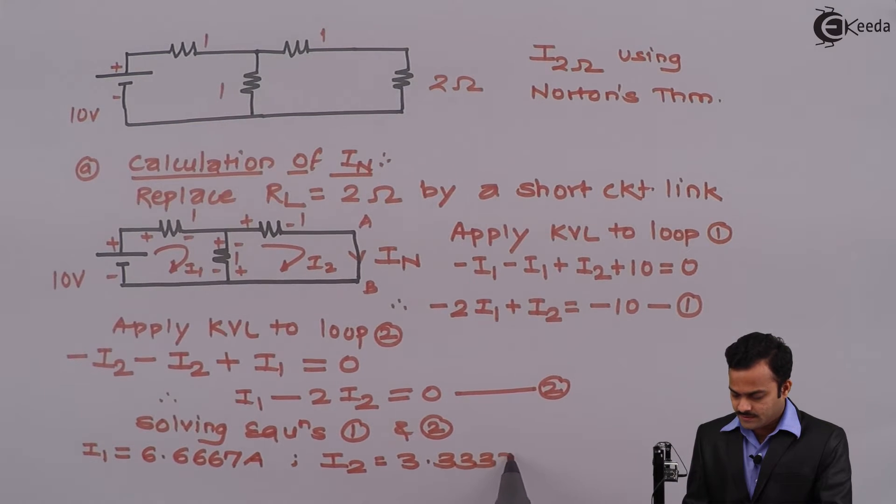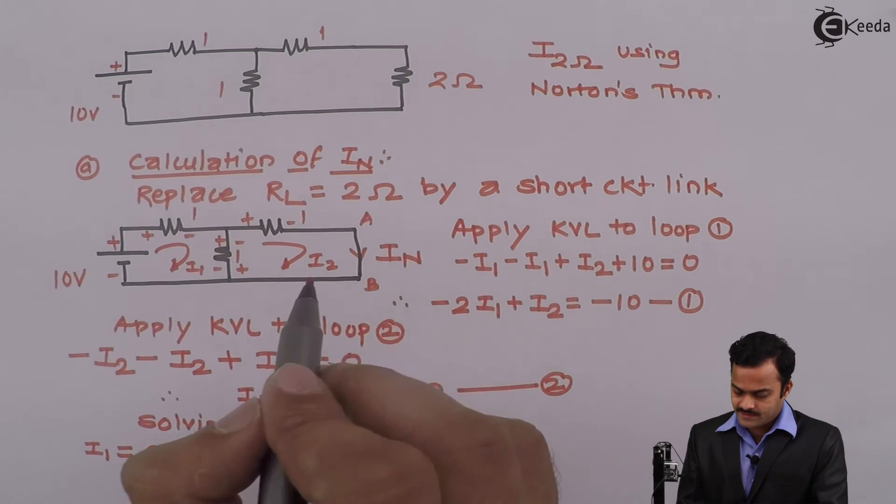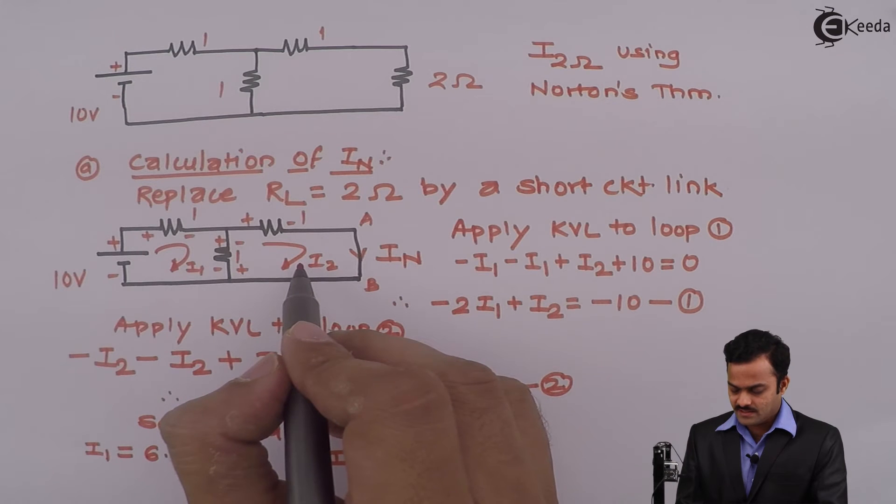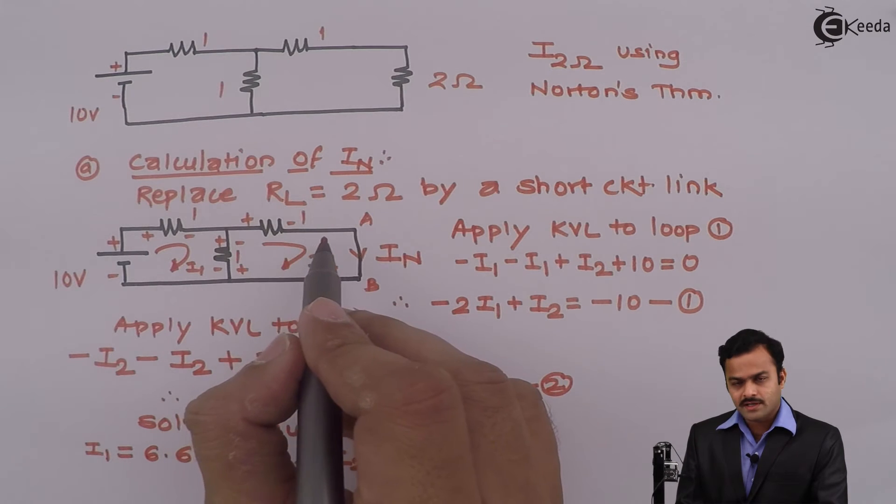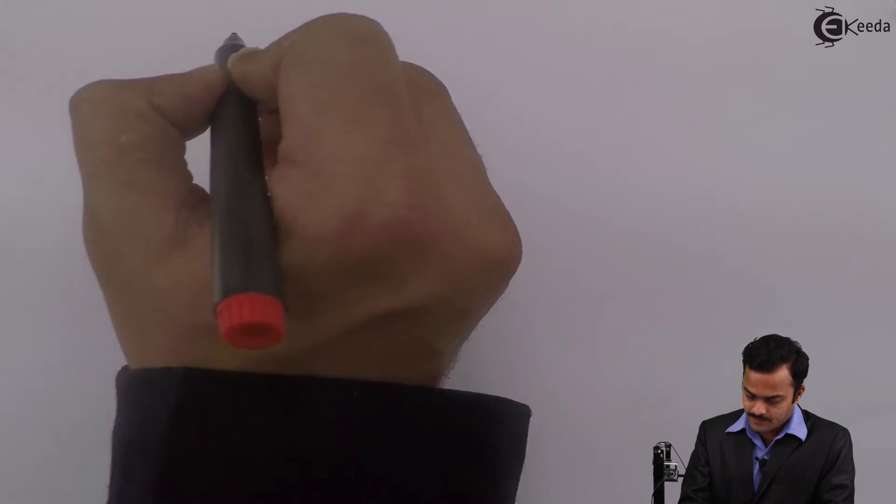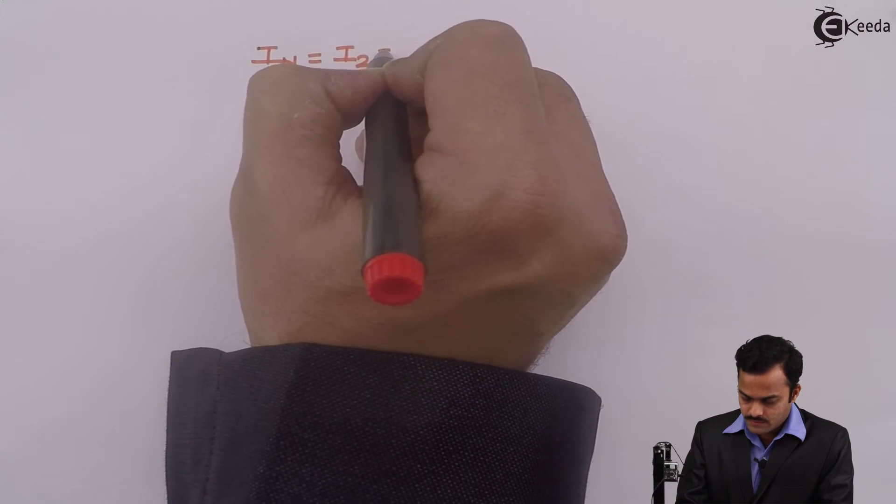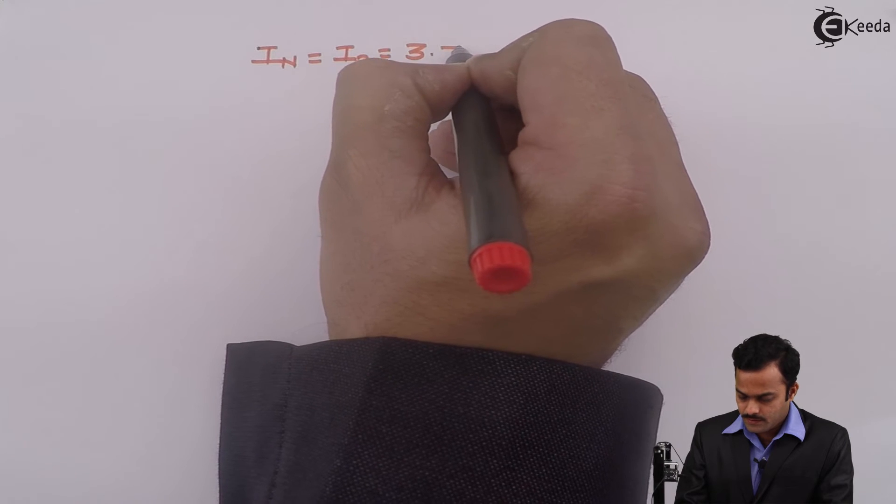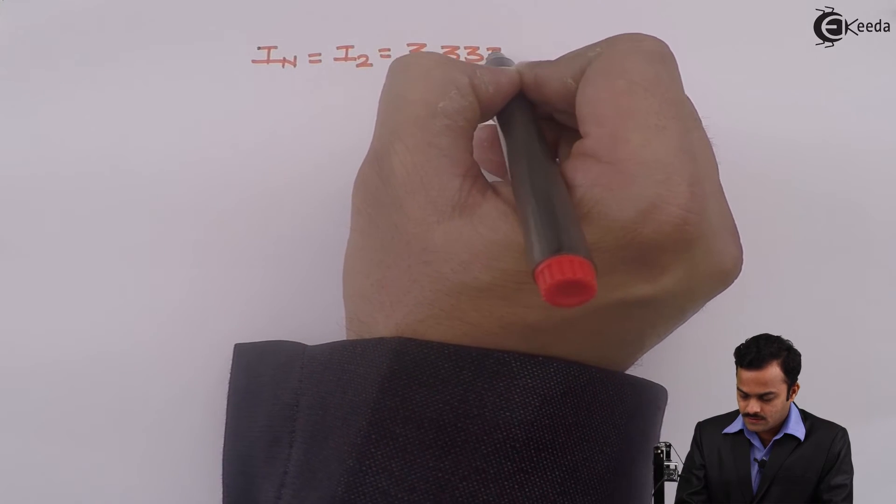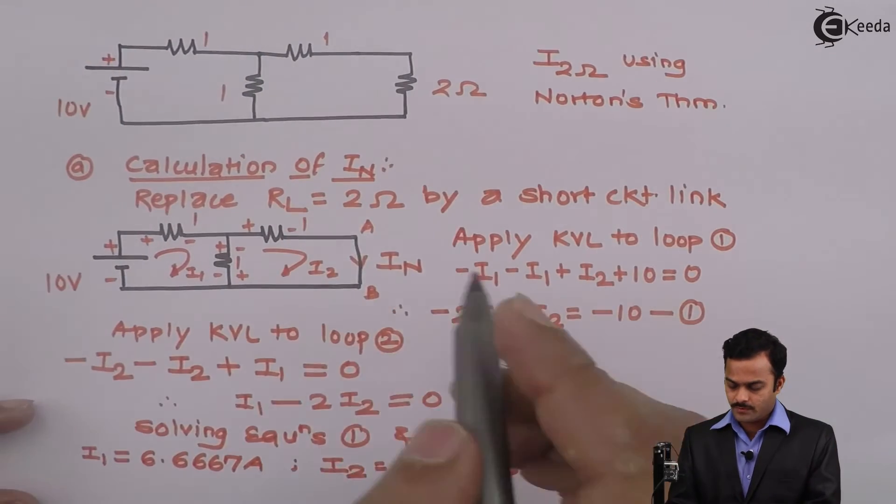Now IN is same as I2. We can conclude that from the diagram. IN I can write as 3.33333 ampere, so IN is same as I2 which is nothing but 3.33333 ampere, and its direction is from A to B.